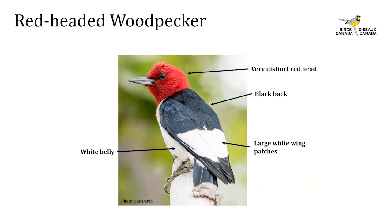The tree diameter of the pileated cavity tree ranges from 45 to 100 cm diameter at breast height, with an average around 60 cm. Cavity heights are usually found in the range of 13 to 20 meters.